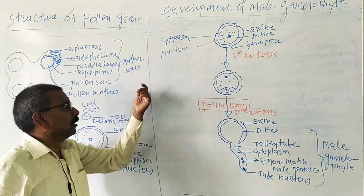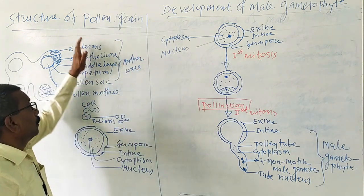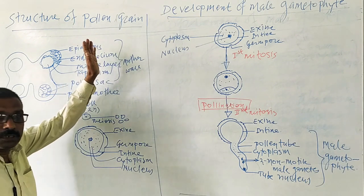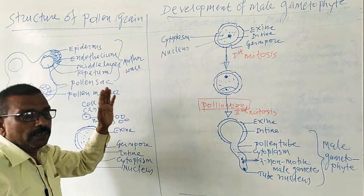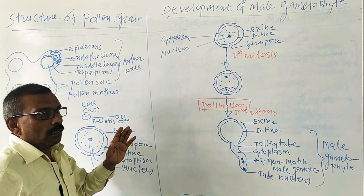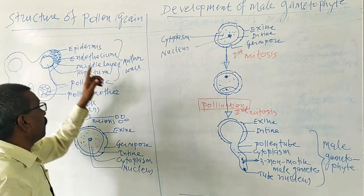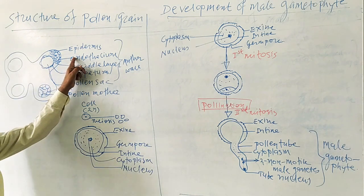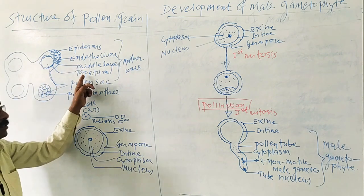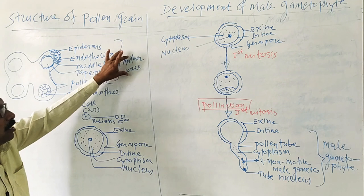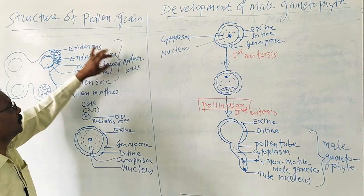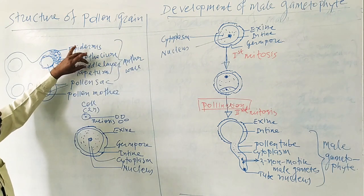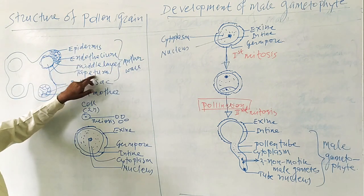Yesterday we studied the structure of the anther in transverse section (TS). The anther divides into two parts: the wall of the anther, which is made up of epidermis, endothecium, middle layers, and tapetum.